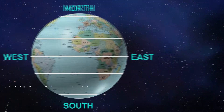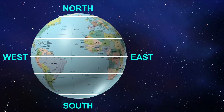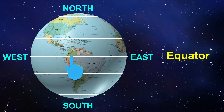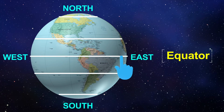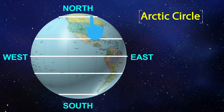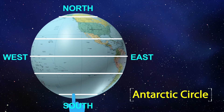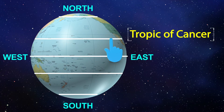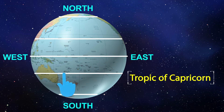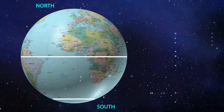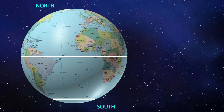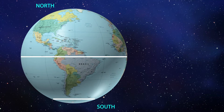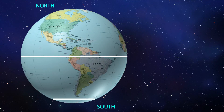There are some important latitudes: the equator, Arctic Circle, Antarctic Circle, Tropic of Cancer, and Tropic of Capricorn. Now I will explain what the Antarctic Circle is.